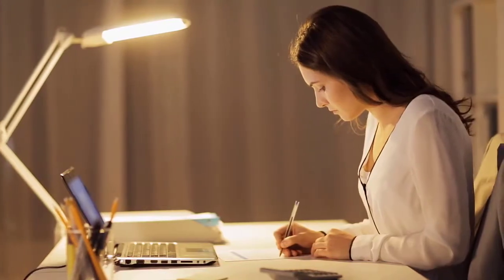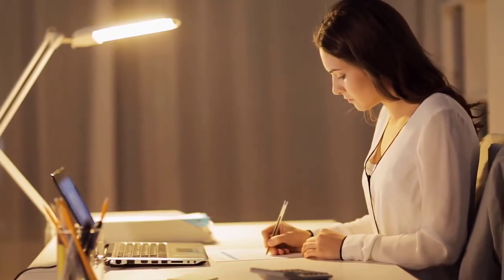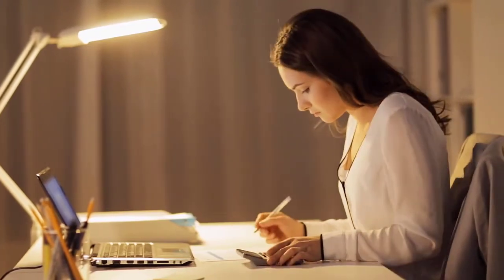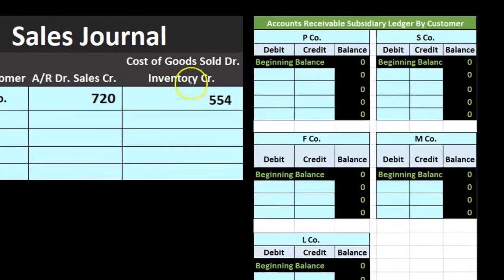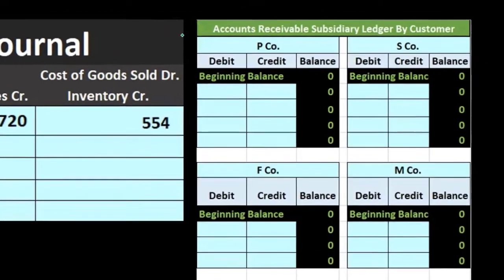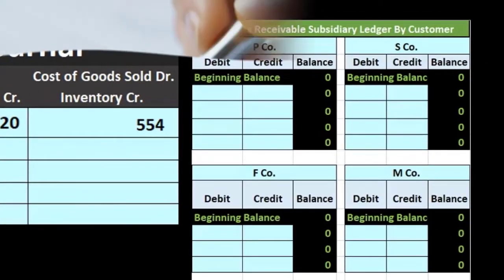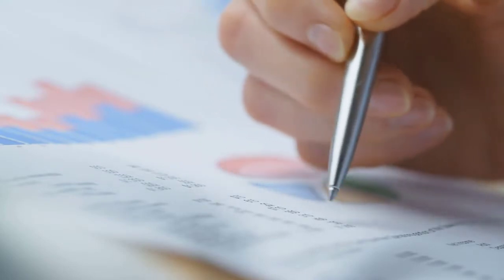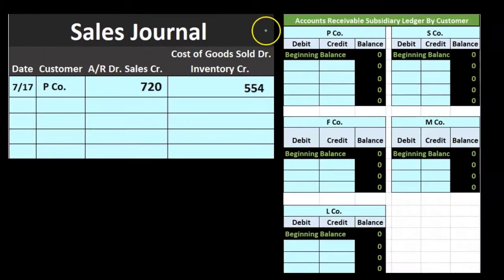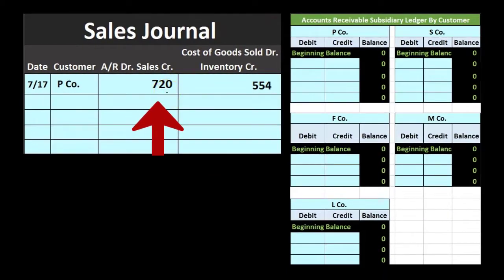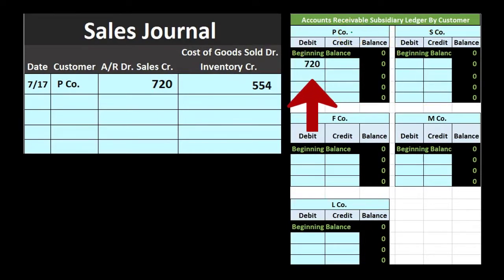We are not going to be posting this to the general ledger, but we will at the end once we sum everything up for the entire time period. As we go, however, we're going to post to the accounts receivable subsidiary ledger, because we have to do this line by line no matter what, so we might as well do it as we go. So this 720 sold to P Company — here's P Company in our subsidiary ledger — goes up by 720 to 720.